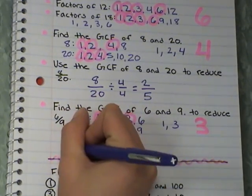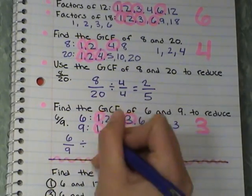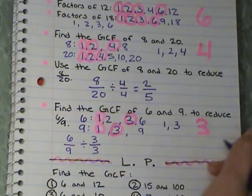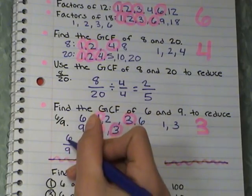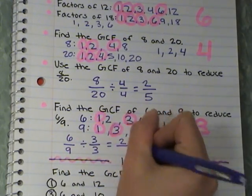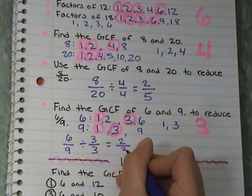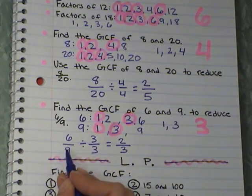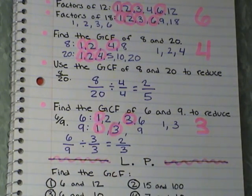So now I'm going to use my GCF to reduce 6 ninths, to bring it to its smallest form. So 6 over 9. I'm going to divide it by 3 over 3, because that is my GCF. 6 divided by 3 is 2. 9 divided by 3 is 3. So when 6 ninths reduced, it's 2 thirds.